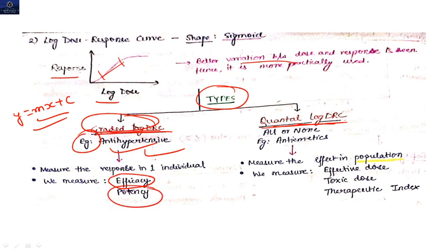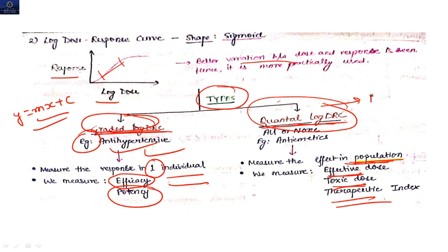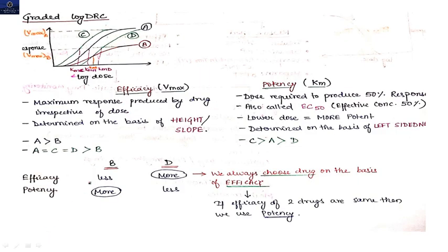The graded log DRC measures the response in one individual and is used to determine efficacy and potency. The quantal log DRC measures the effect in a population and is used to determine effective dose, toxic dose, and therapeutic index. So the quantal log DRC is used for population studies, while the graded log DRC concerns the efficacy and potency of a particular drug.